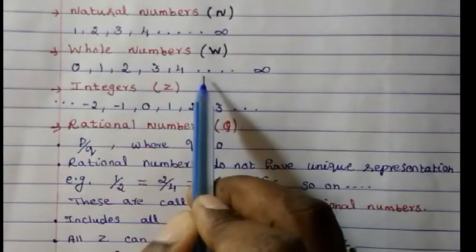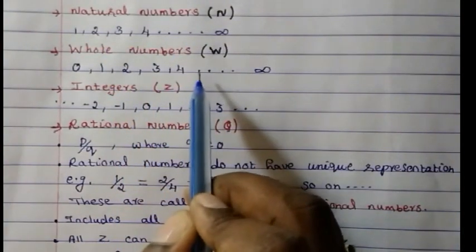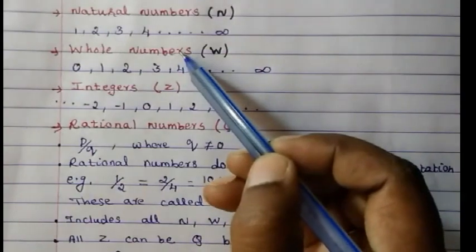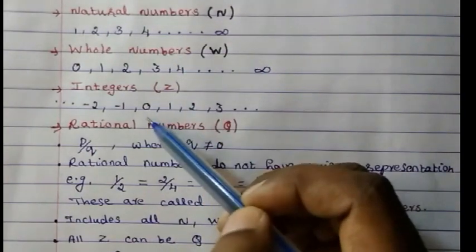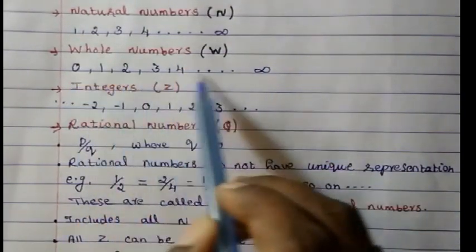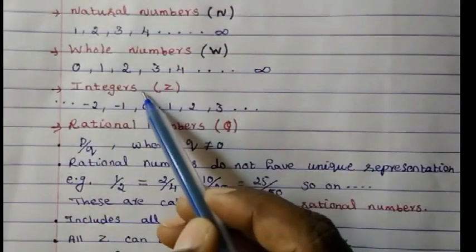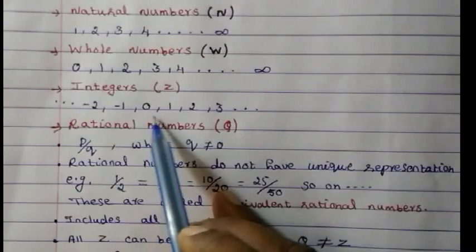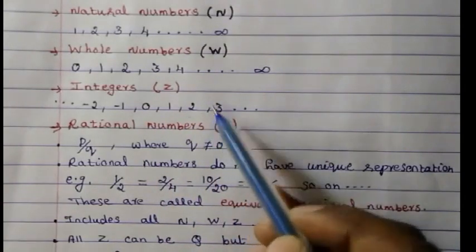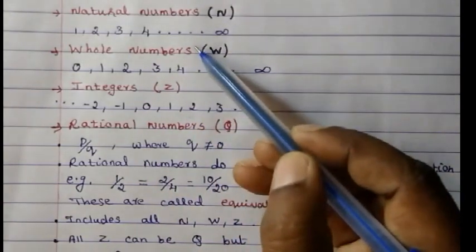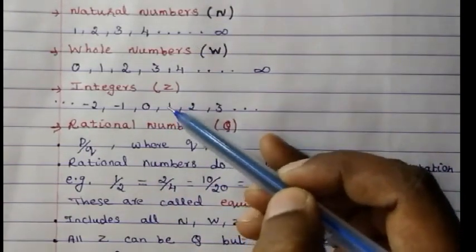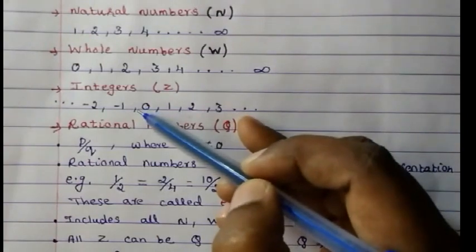Same way, all whole numbers are contained in integers — that is, from 0 onwards. So integers contain 0 and all positive whole numbers. Therefore whole numbers can be integers, but not all integers can be whole numbers.